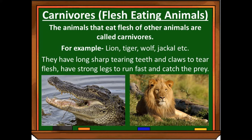Their teeth are long and sharp — you can see in this picture the teeth of the crocodile — so that they can cut and tear flesh. And they have claws to tear the flesh, to grip it and tear it with their tearing teeth. They also have strong legs to run fast and catch their prey.